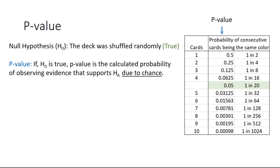If the null hypothesis is true, the p-value is the calculated probability of observing evidence that supports the alternate hypothesis due to chance. This is exactly what was happening in our little scenario. We kept drawing black cards just due to chance, and as we did that, the p-value got smaller and smaller.